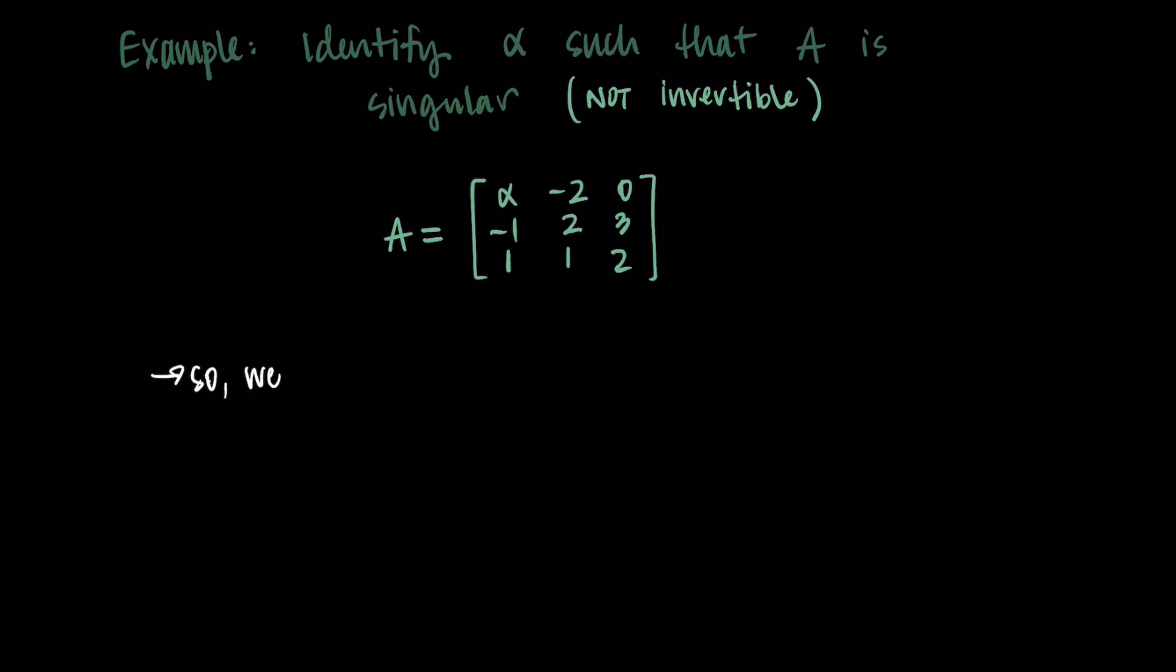So we're wanting this matrix to not be invertible, we want it to be singular. And so we'd like the determinant to be equal to zero. Because if the determinant is zero, then this doesn't have an inverse, which is what we've been asked to find.